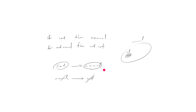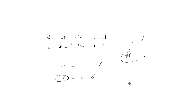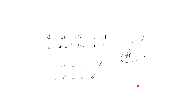So remember two things: contrapositive, and never push back against the arrow, and never push where there is no arrow. If you remember all that, you'll avoid the oldest mistake in the book — the sufficiency-necessity confusion and the contrapositive mistake.